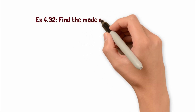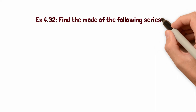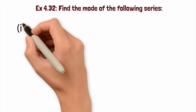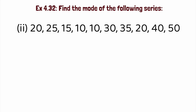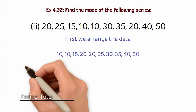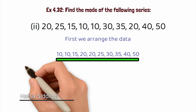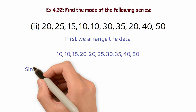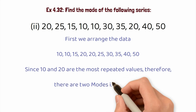Next, exercise 4.32: Find the mode of the following series, part 2. The numbers are: 20, 25, 15, 10, 10, 30, 35, 20, 40, 50. We arrange in ascending order: 10, 10, 15, 20, 20, 25, 30, 35, 40, 50. Now looking at the data: 10 appears 2 times, 15 appears 1 time, 20 appears 2 times, and 25, 30, 35, 40, 50 each appear 1 time. Since 10 and 20 are the most repeated values, there are 2 modes — that is, 10 and 20. This is a bimodal distribution.